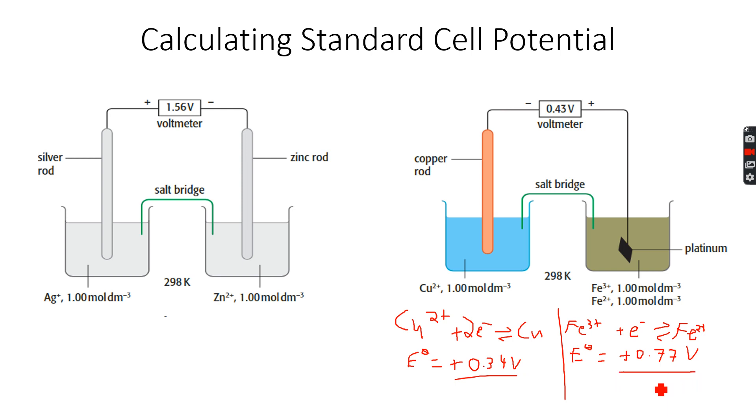So what we will do is invert the copper equation this time because it is the lower value. So this will become Cu gives Cu²⁺ plus 2e⁻, and we'll have to invert the sign so this becomes minus 0.34 volts. Now we will add 0.77 and minus 0.34, and what we get is plus 0.43 volts.